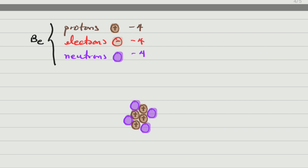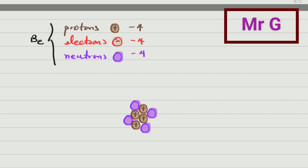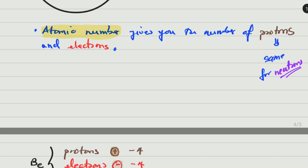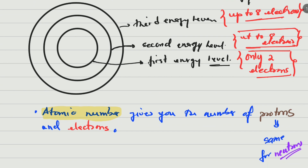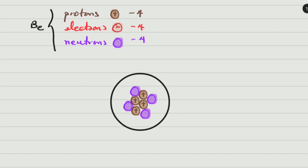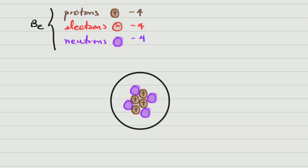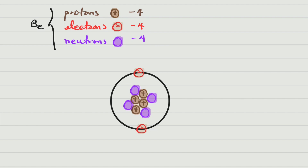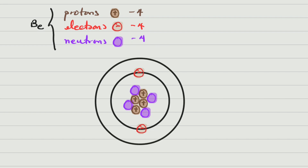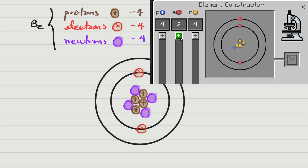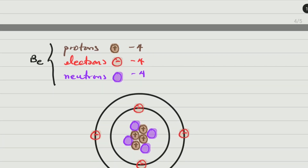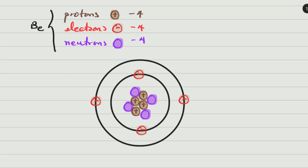Now, what about the electrons? For the electrons, we first need to draw an energy level. We always draw the first energy level first. In the first energy level I can only place two electrons. However, I have four. So I'm going to place two electrons in the first energy level. I still need two more, so I'm going to go to the next energy level. In the next energy level I place up to eight, but I only have two electrons left, so that is what I place there. This is how to draw atoms — I hope you understand. You can now try and draw any other one from the first 20 elements.